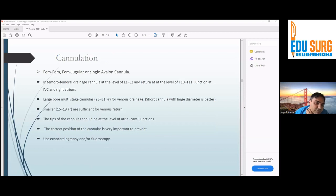So cannulation. In VV ECMO, we normally do either femfeme, bilateral femoral, femjugular, or single Avalon cannula. To be honest, I have done femfeme, I have done femjugular, but I haven't done single Avalon cannula. It's very complicated and tricky to insert. So I'll just talk about femfeme and femjugular.